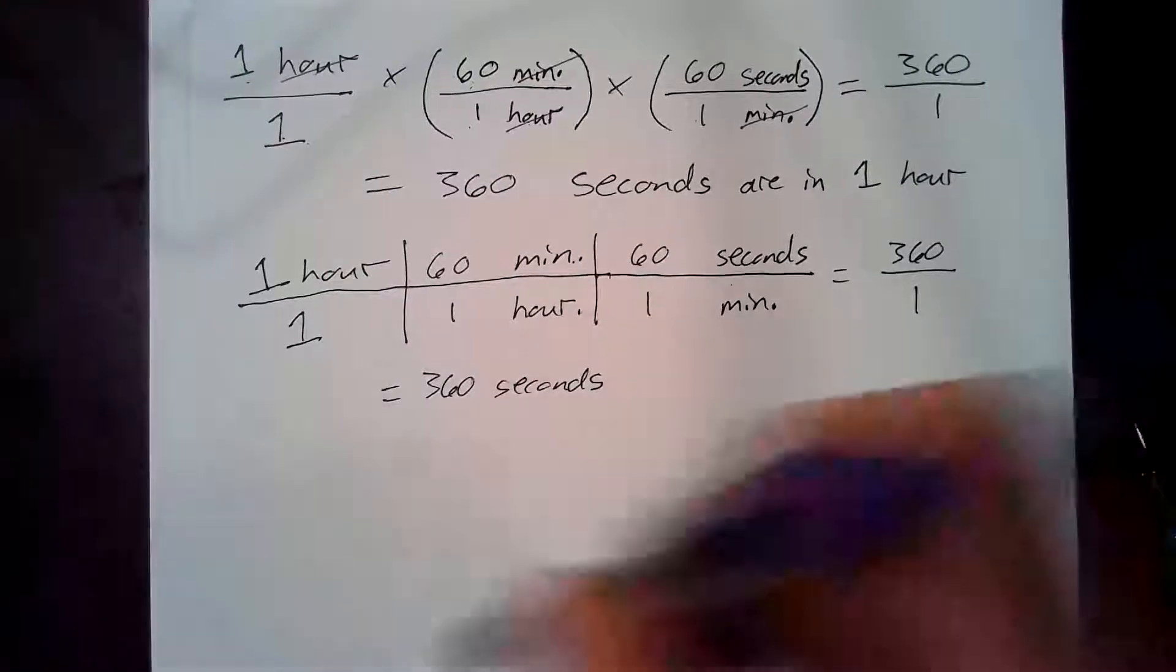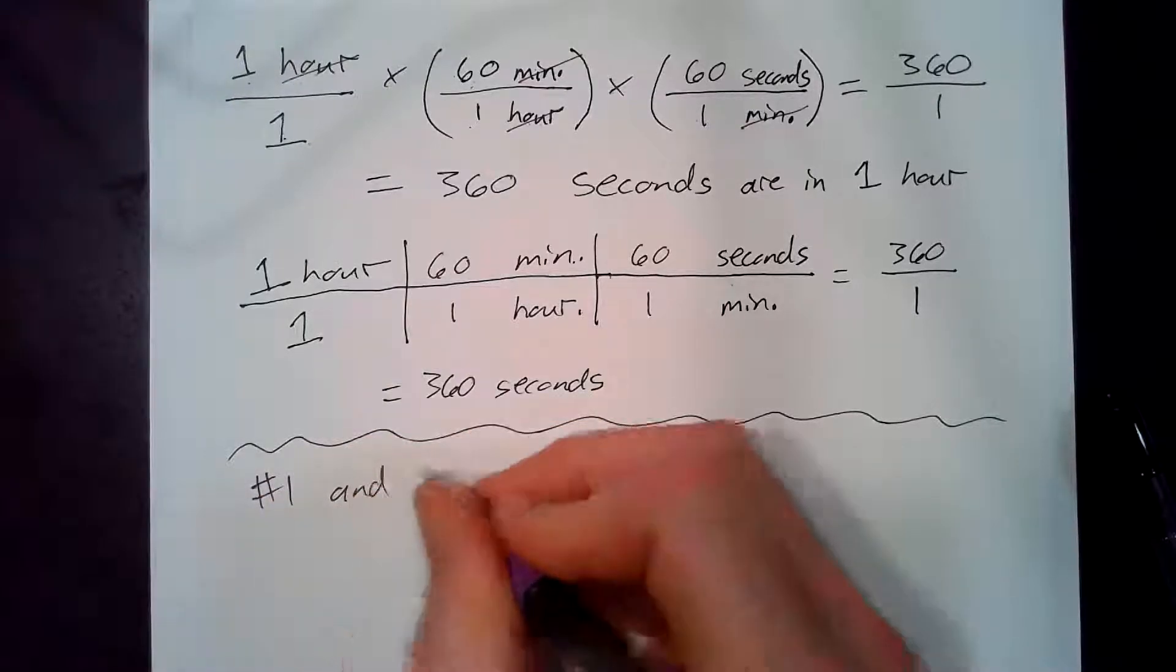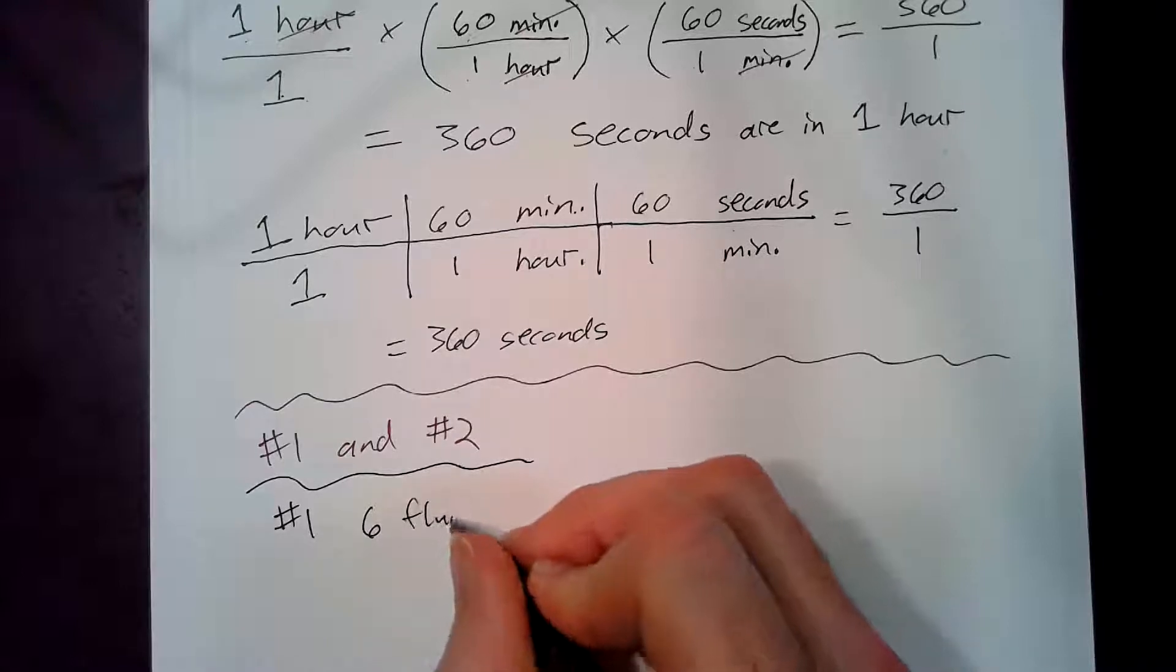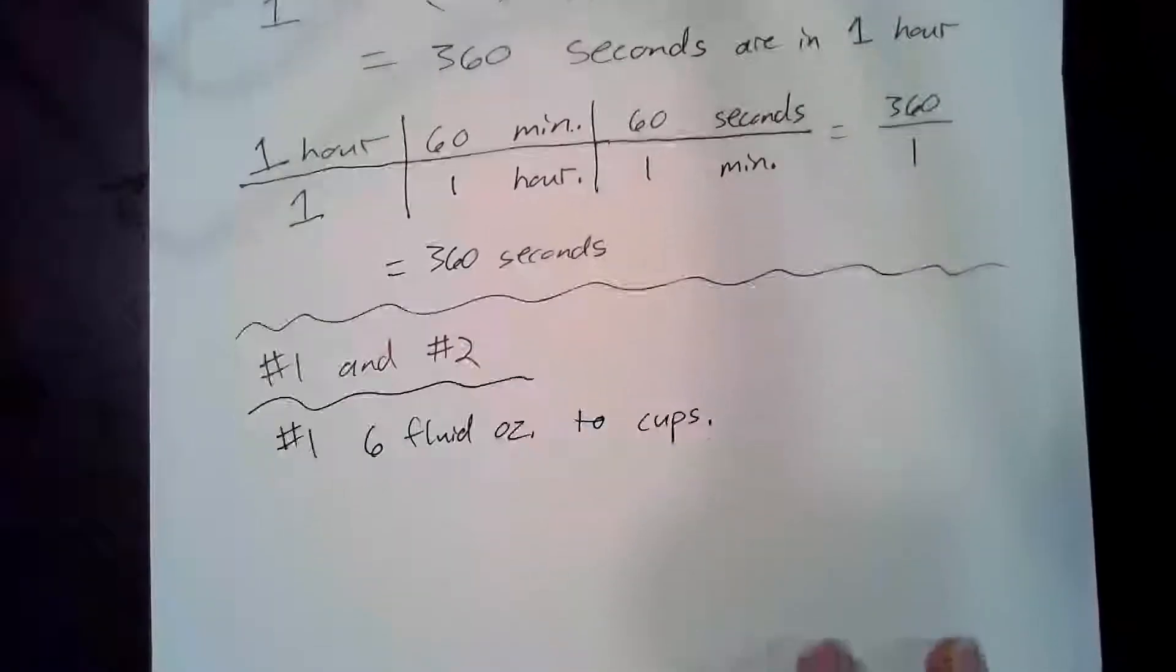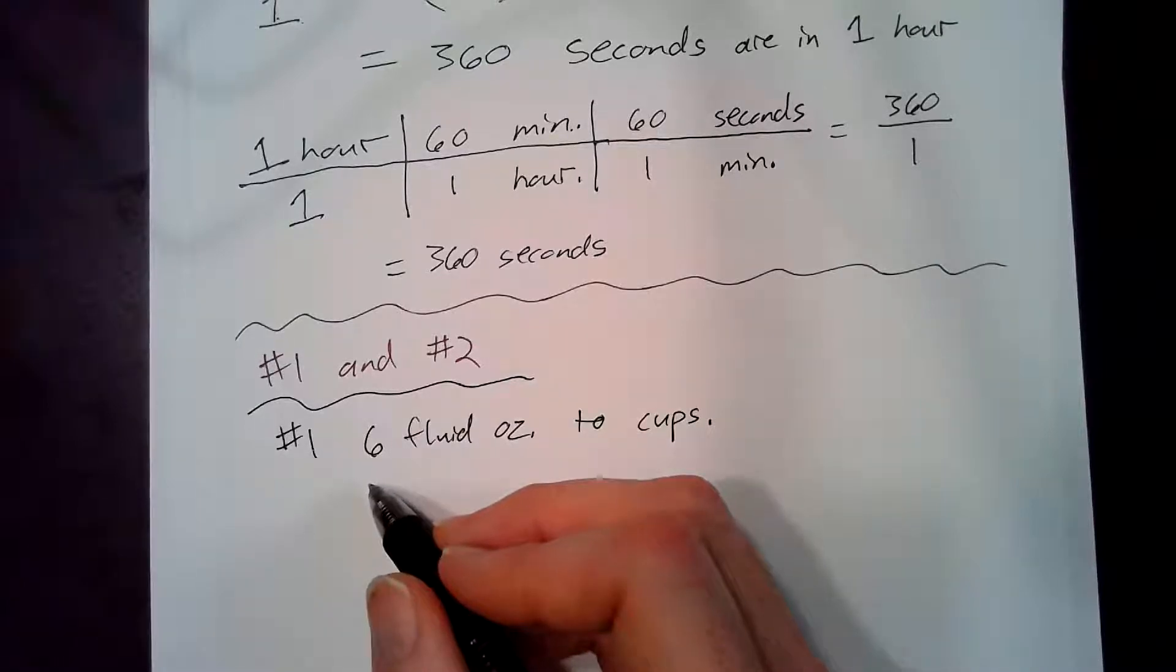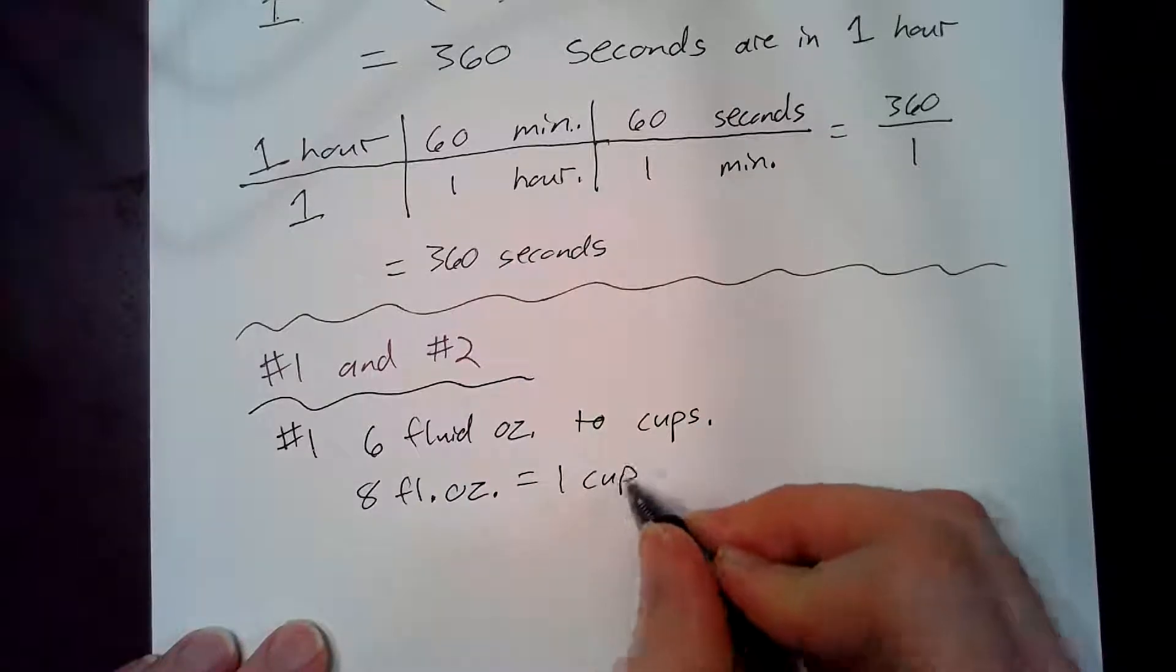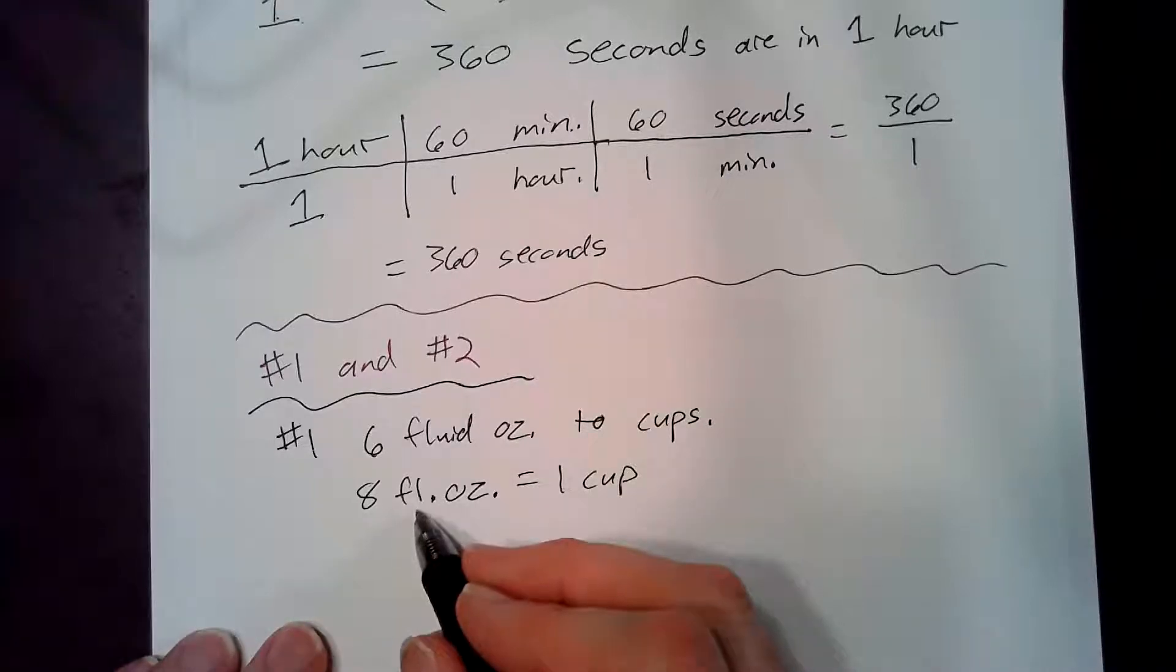Now I'm going to try to do some examples that are from your worksheet and I will be doing problems number one and number two. So number one is asking me to convert six fluid ounces to cups. Alright. And I asked you to do a couple of things. I want you to write the conversion factor that's required and there are eight fluid ounces equals one cup. I asked you to write the conversion required and then I also asked you to show the railroad tracks and your answer.